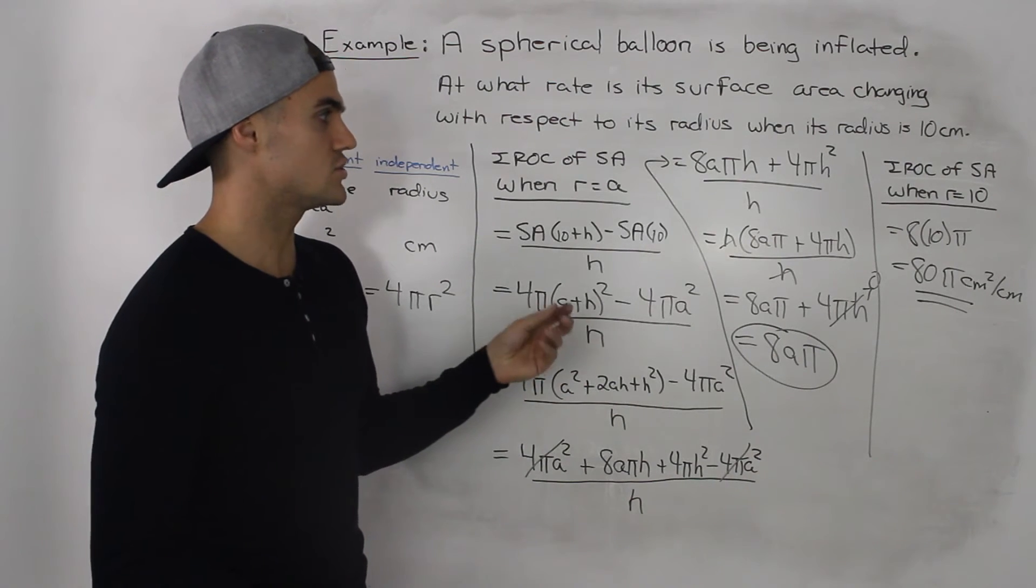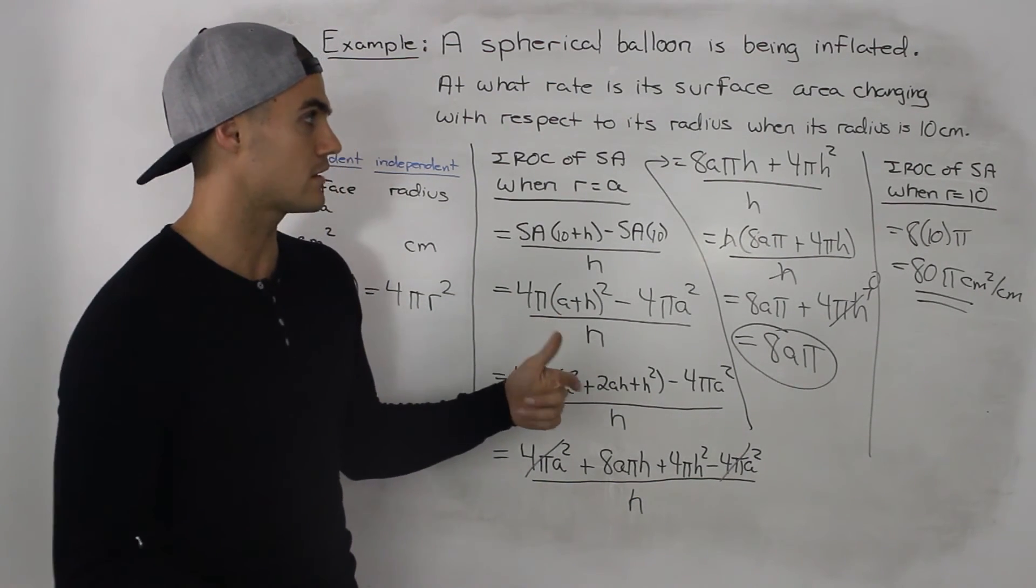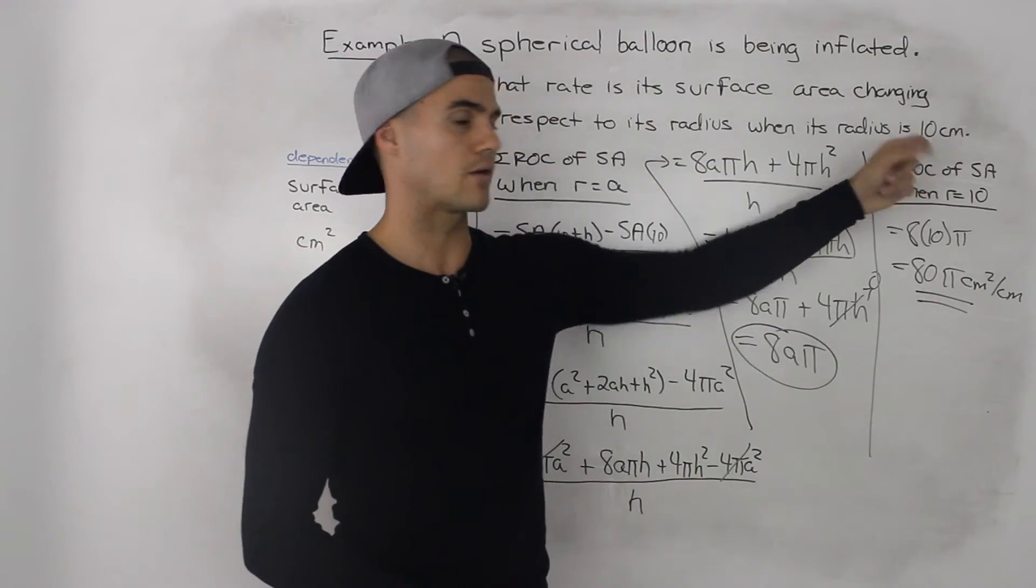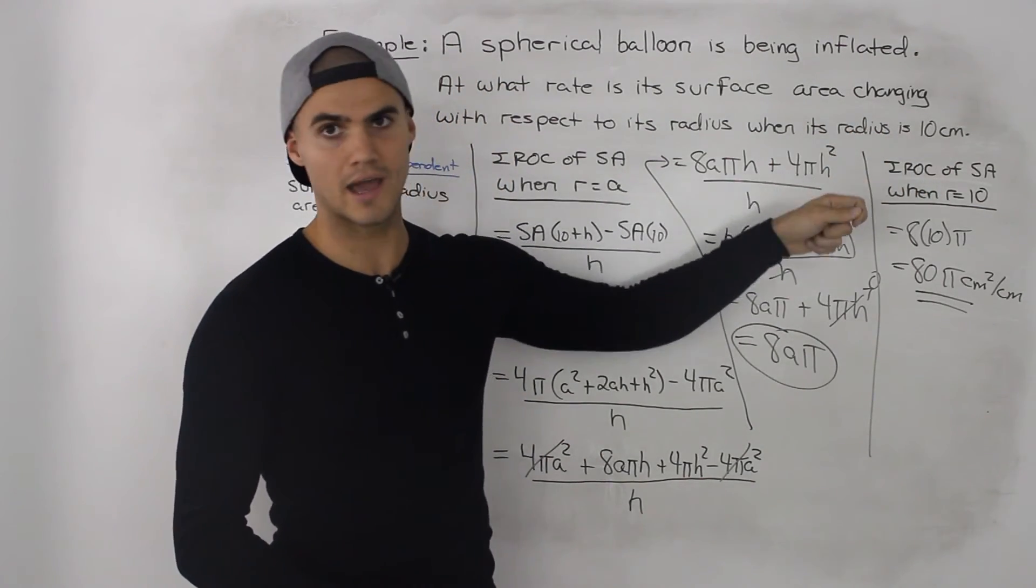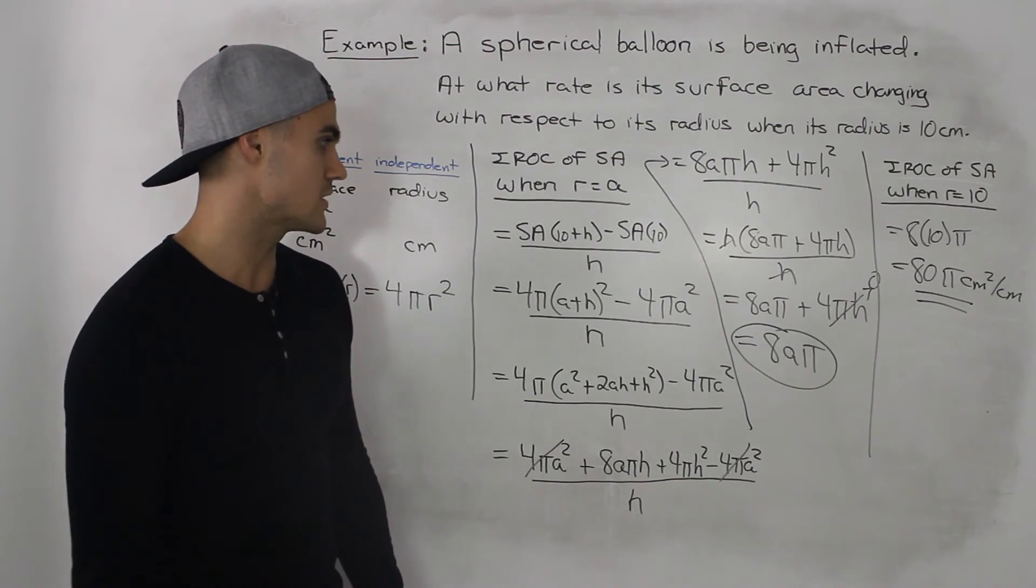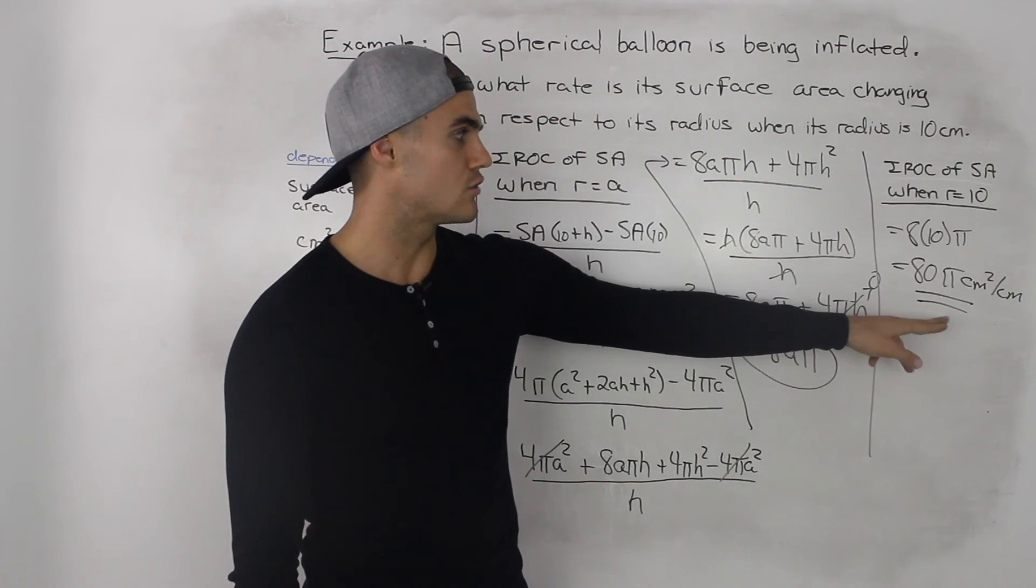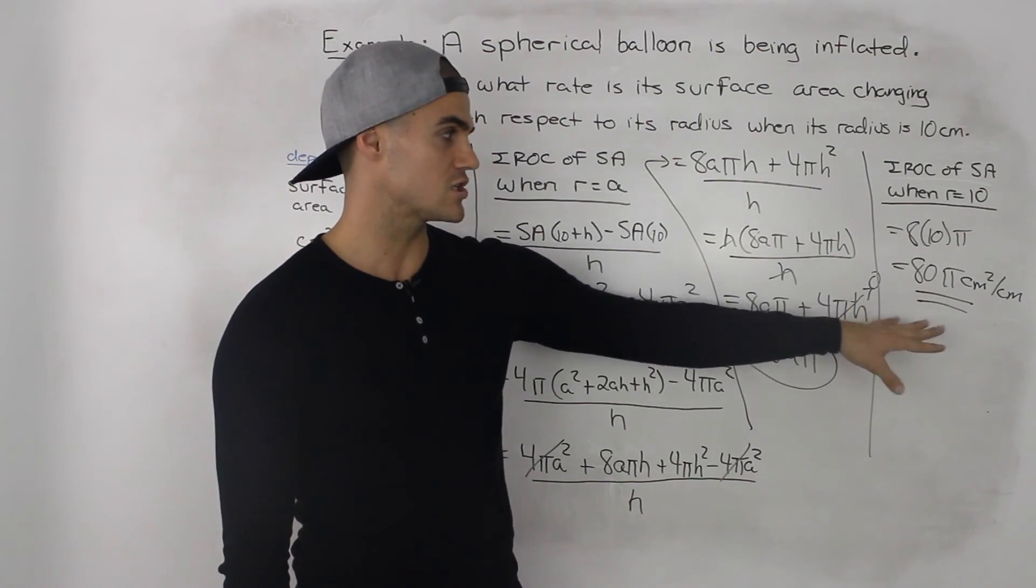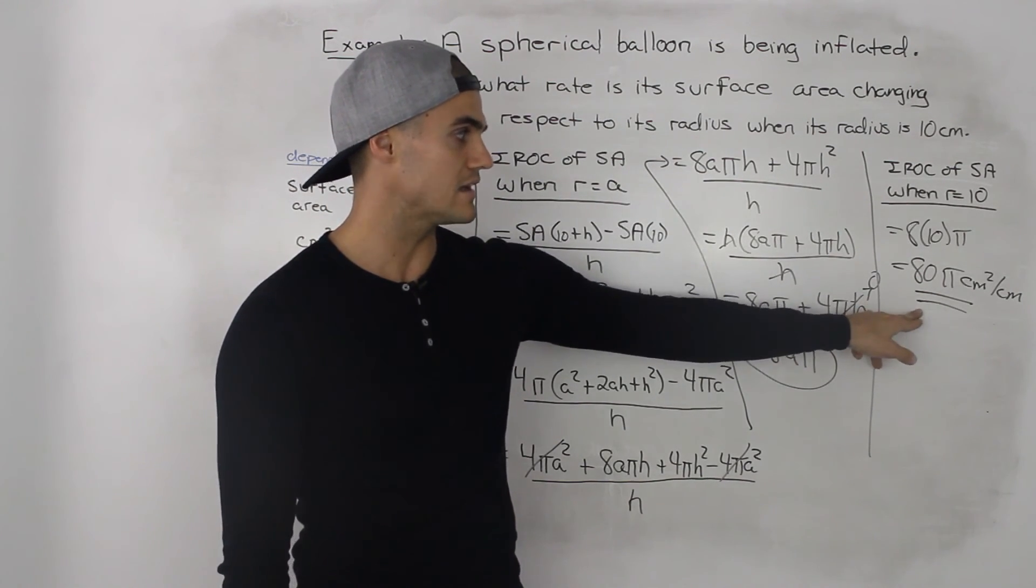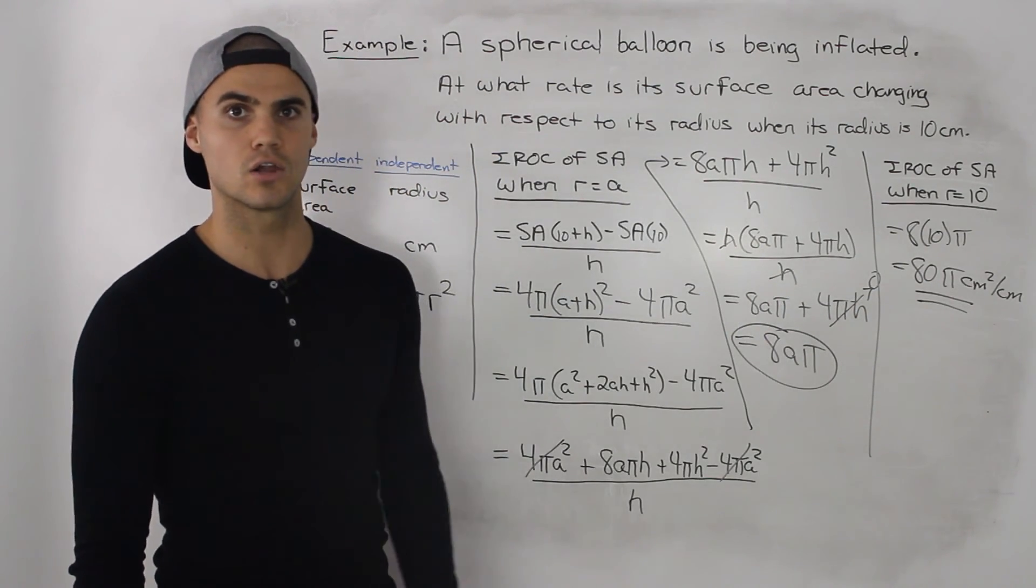Another thing you could have done is use the preceding following method or the centered interval method. So you would pick points that were very close like 9.9 and 10.1 and then do the average rate of change between those points. But either way you should get either the exact instantaneous rate of change like we did in this question of 80π centimeters squared per centimeter or something very close.